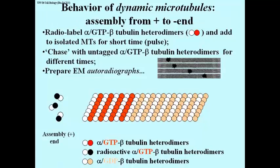After that short pulse of labeling — allowing the microtubule to grow a little using radioactive heterodimers — the sample is centrifuged. The microtubules are brought down to the bottom of the tube and the supernatant is discarded, throwing away any remaining radioactive alpha-beta heterodimers. To the sedimented microtubule pellet, fresh solution containing non-radioactive alpha-beta heterodimers is added. During the time that the non-radioactive heterodimers are present — called the chase — the microtubule will continue to grow.